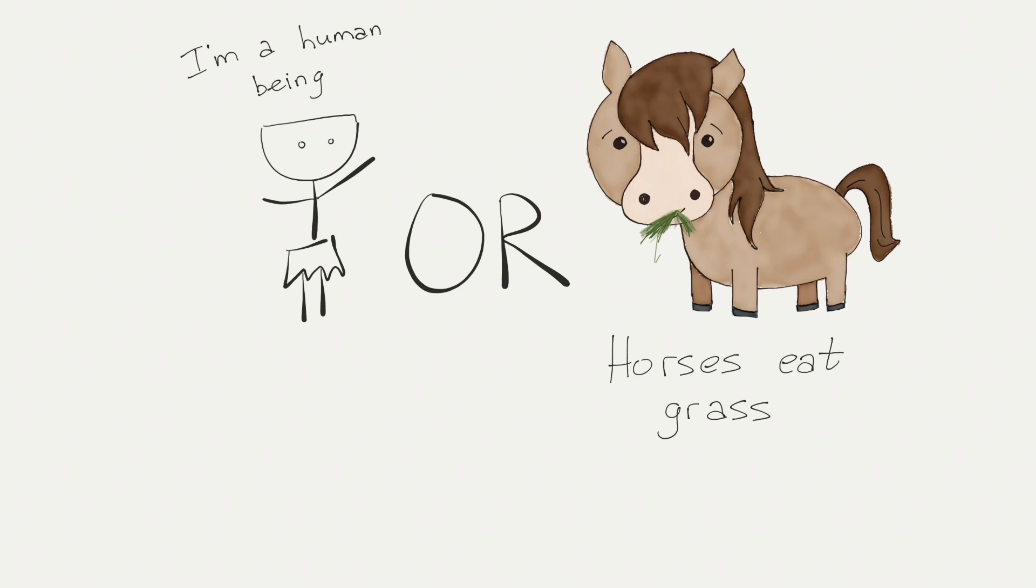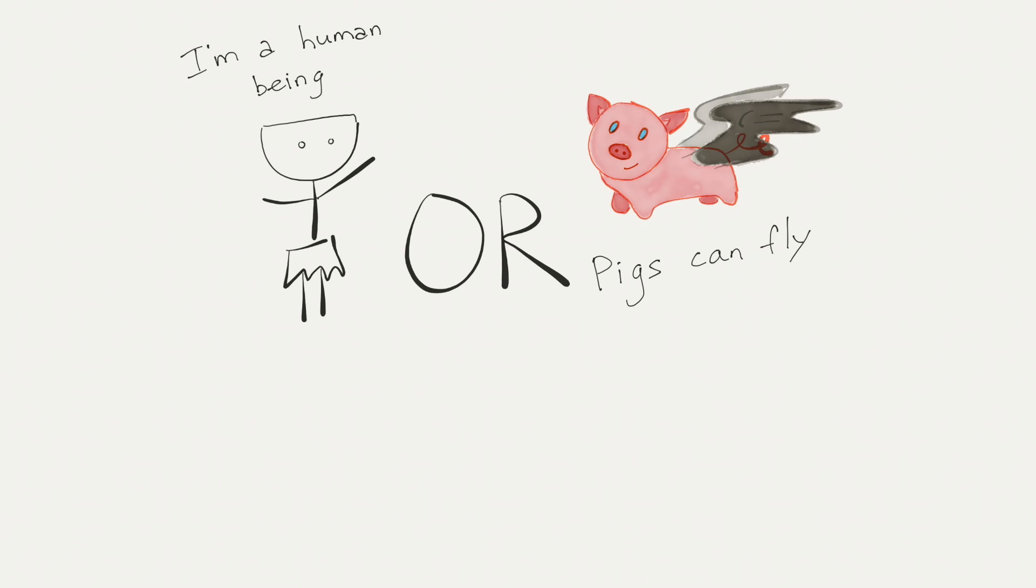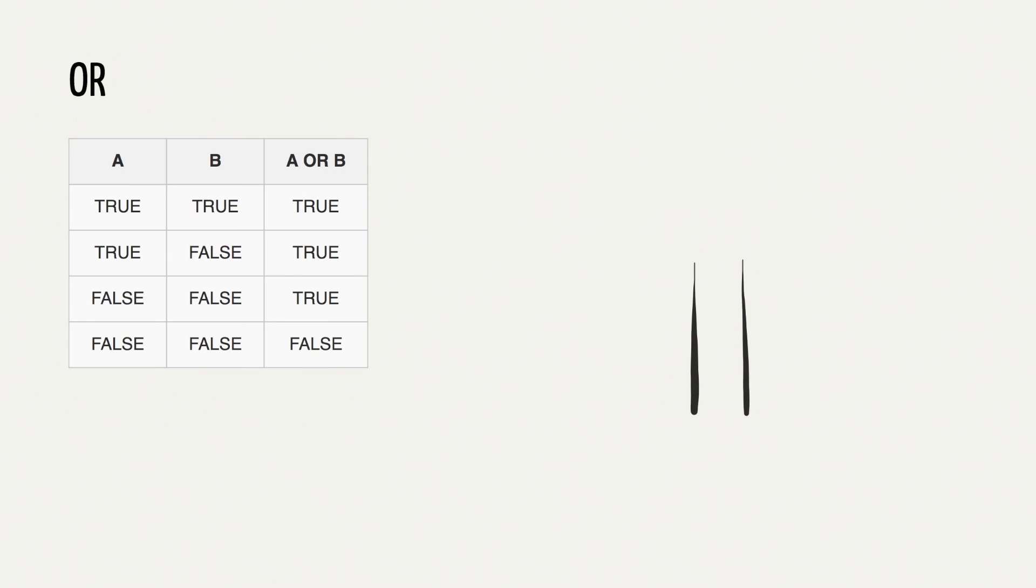Or is when you want at least one condition to be true. Following the same examples, I'm a human being or horses eat grass is true. I'm a human being or pigs can fly is also true. Even though pigs don't fly, I am a human being, so one of the two statements is true, which makes this whole thing, joined by or, true. The symbol for or is two vertical bars. If there is true, then the result is true.